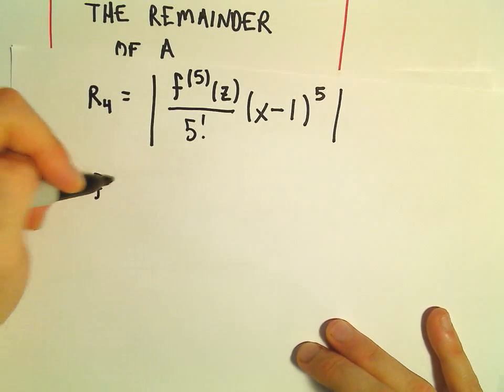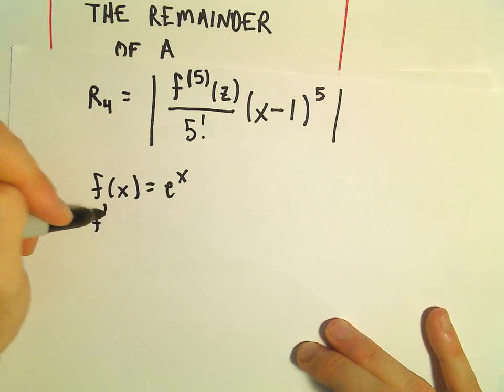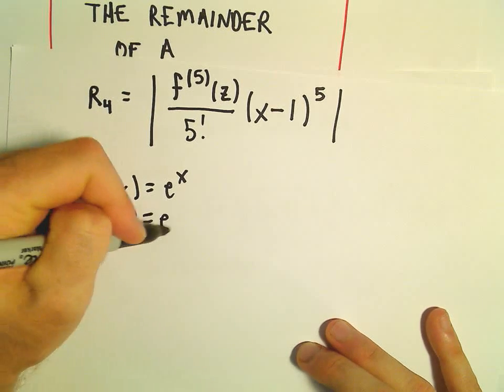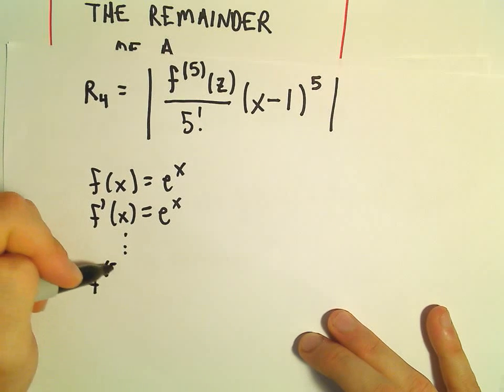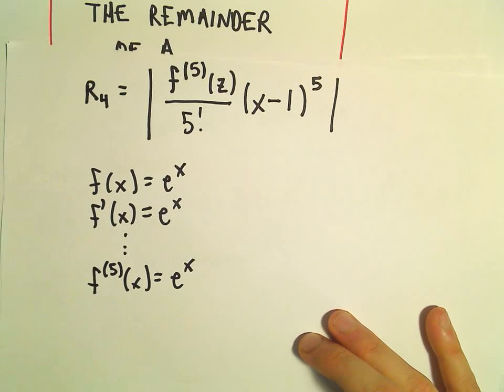Well, in this case, our function f of x is just e to the x. All of the derivatives for f of x are e to the x, so eventually the 5th derivative for x, that's also going to be e to the x.